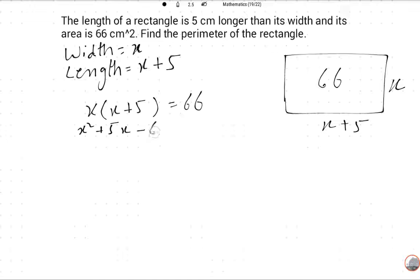I will use middle term break: x² + 11x - 6x - 66 equals 0.